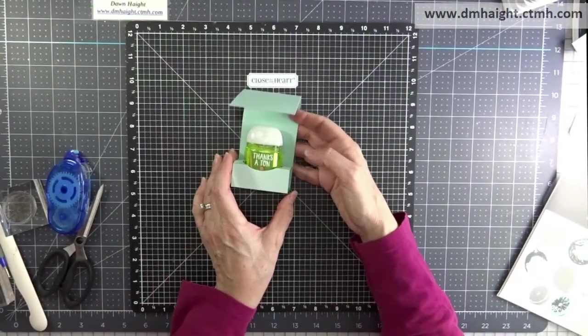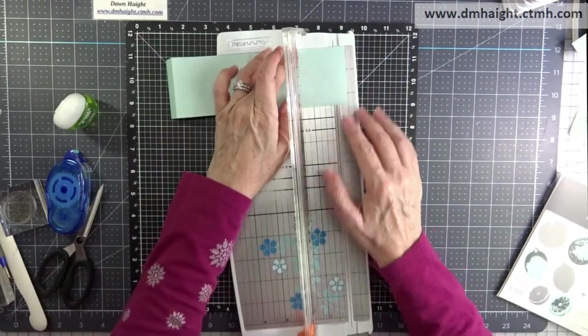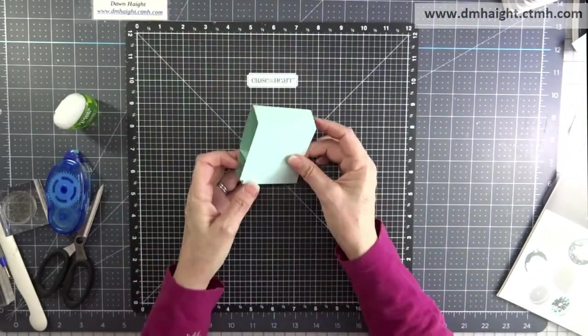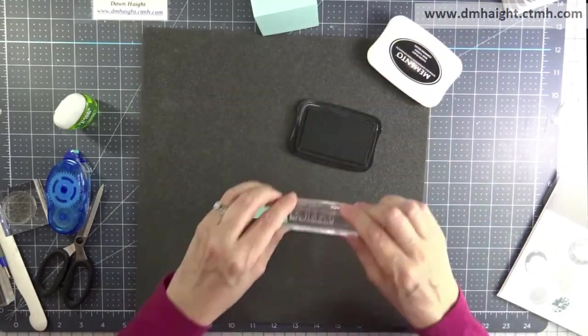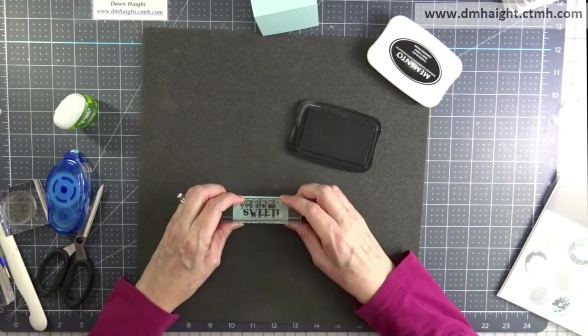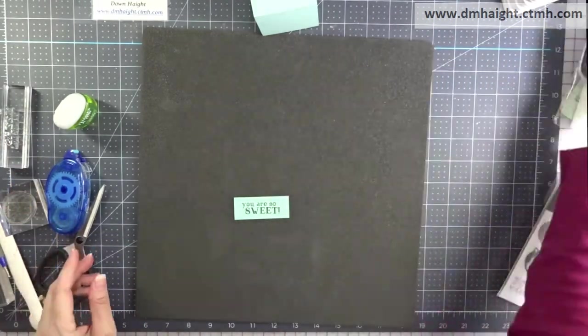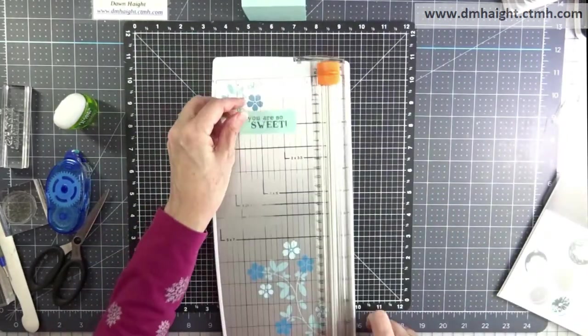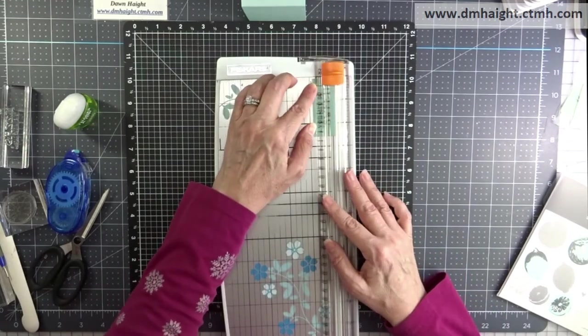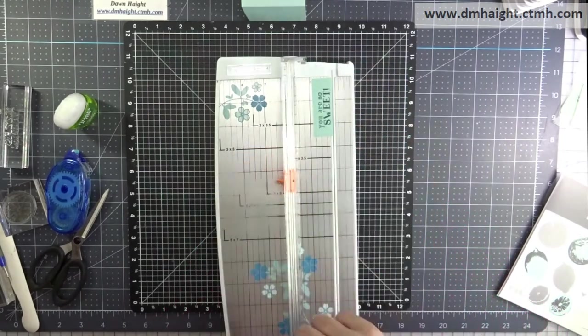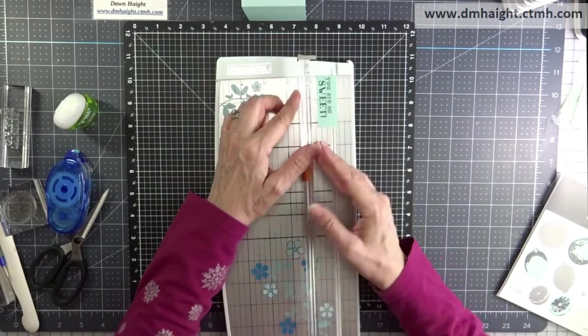This is the other way that you can make your closing. I've assembled the box the same exact way that I did the yellow one. Now I'm going to cut off a half an inch off the front flap. I'm going to stamp out a little sentiment that says you are so sweet. This one is in Glacier. Then I'm just going to trim around this sentiment. I'm going to create a little rectangle and trim it as close to the stamped image as possible.